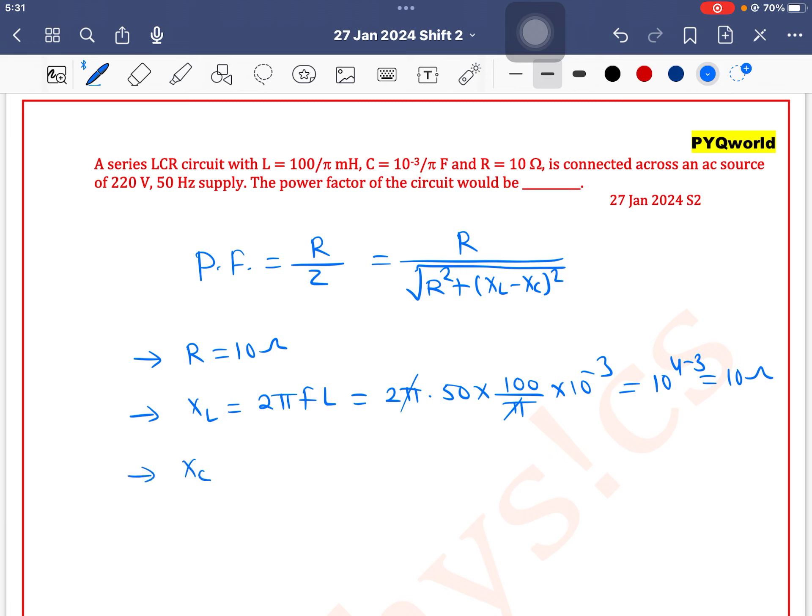And value of XC, formula for XC is 1 by 2 pi FC which equals 1 by 2 pi into F is 50 into C is 10 to the power minus 3 by pi. So this pi and this pi cancel out. 50 into 2 is 100, it means 10 to the power 2. 10 to the power 2 into 10 to the power minus 3, so 10 to the power minus 1. In numerator we have 10 ohm.